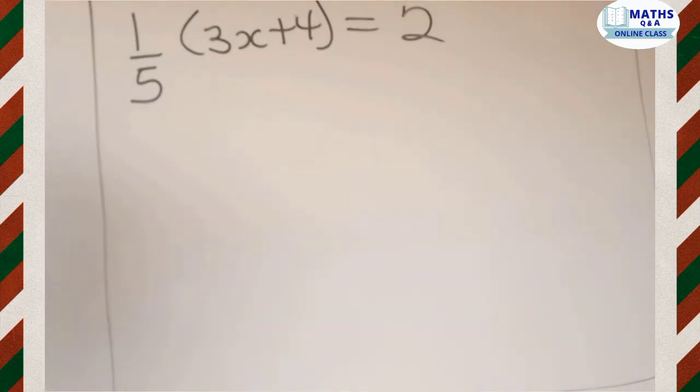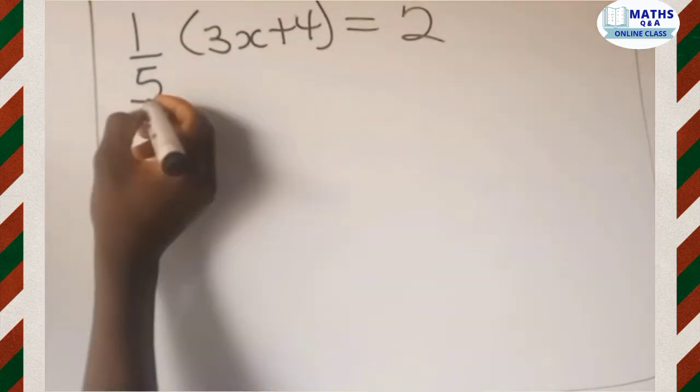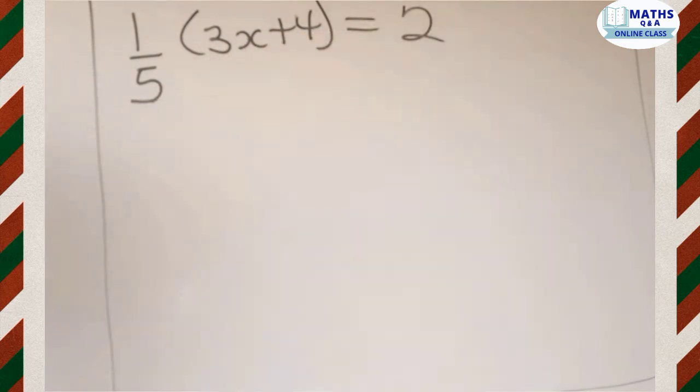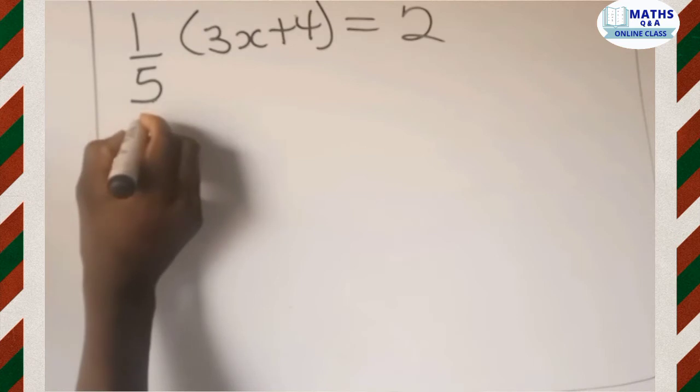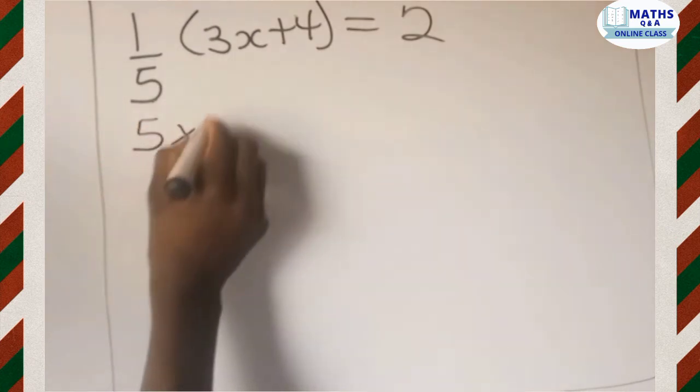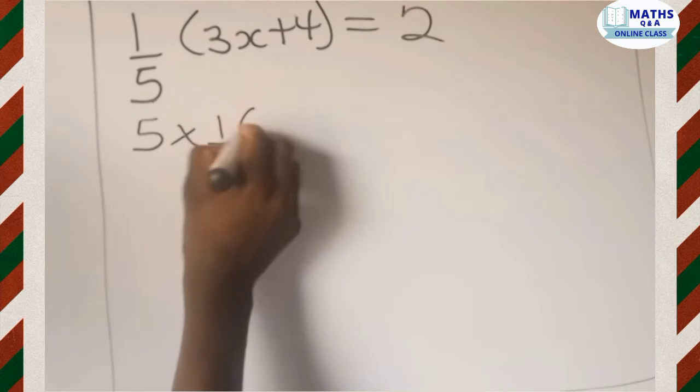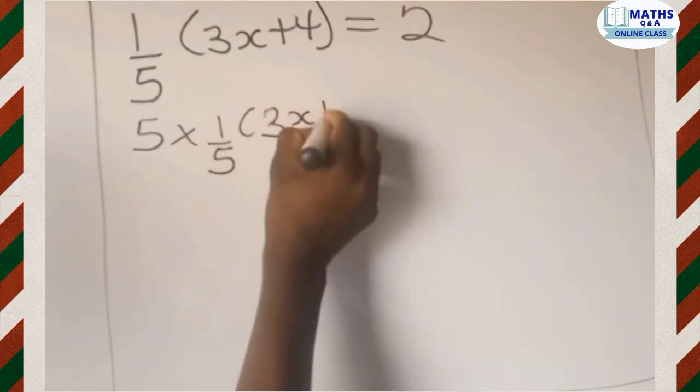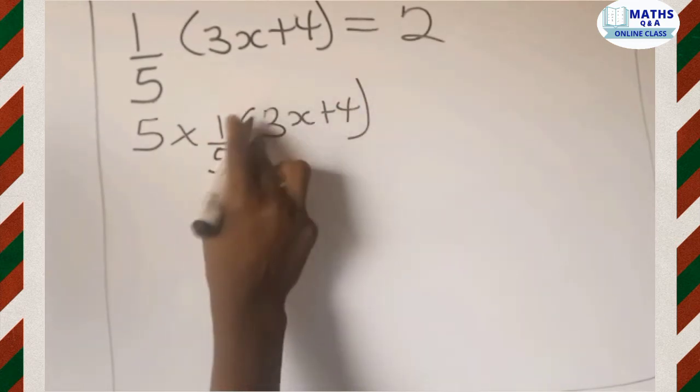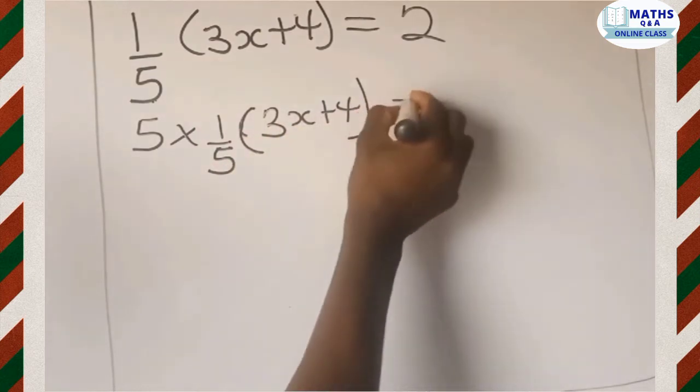After getting the LCM, now we multiply the LCM by each term in the question. So let's do that. We take 5 and multiply it by one-fifth of 3x plus 4. That is equal to, you multiply the same LCM by 2.